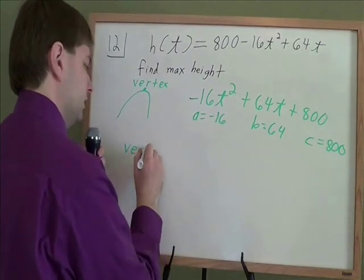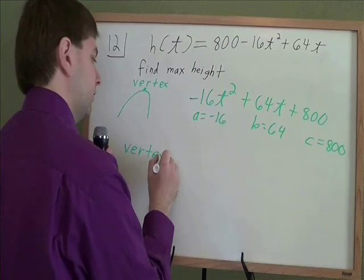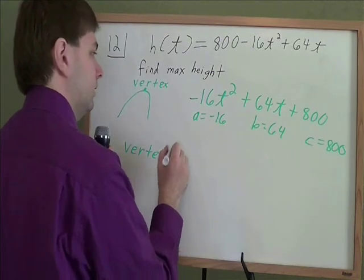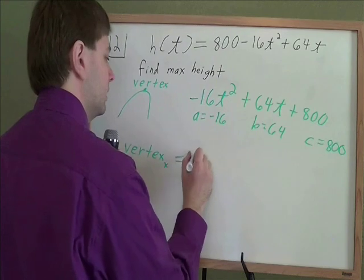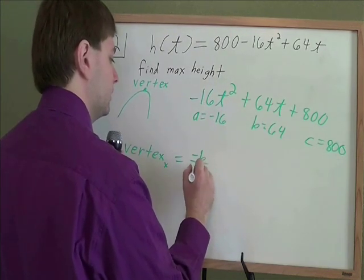And that is that the vertex for the input for the x, well here the t, is negative b over 2a.